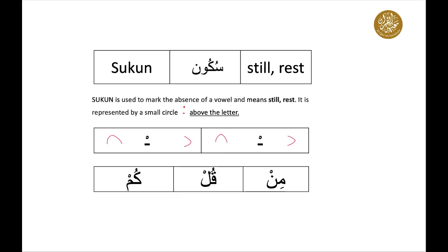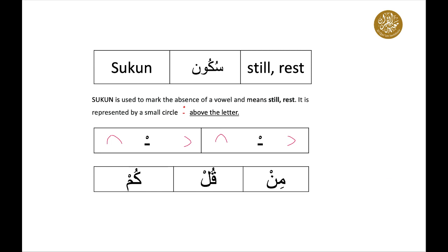Let's talk about sukun. Sukun is used to mark the absence of a vowel and it means 'still' or 'rest.' It is represented by a small circle above the letter. Depending on the mushaf, sukun can appear in three different ways, as you can see on the slide. The examples of sukun are: min, kul, kum.